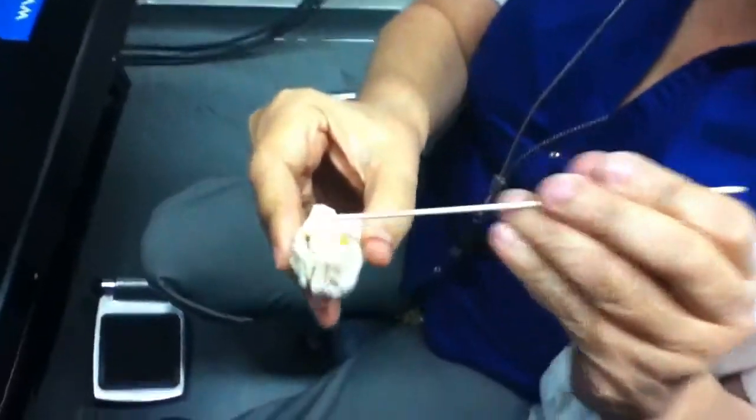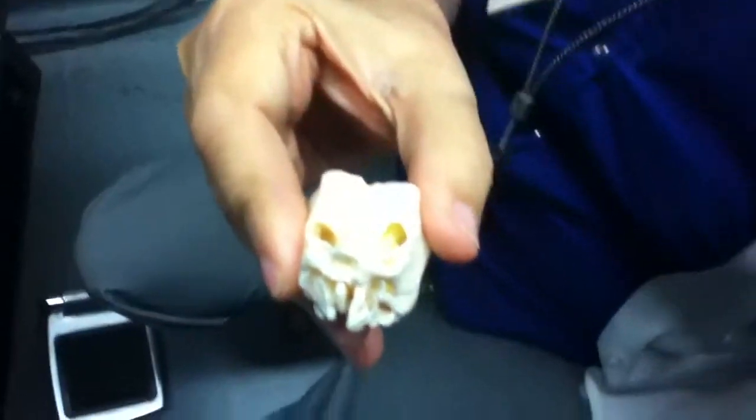When you open up the cranium, you can see the crista galli and the cribriform plate.